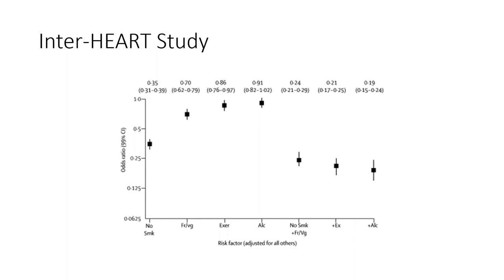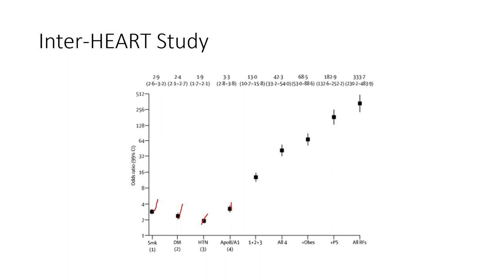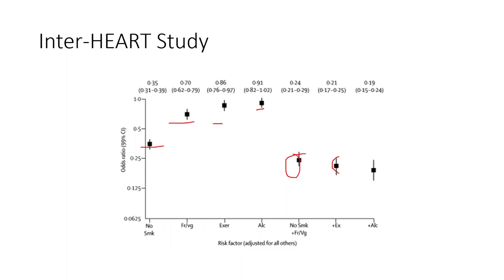Then we looked at things we can do to reduce the risk. Cutting out smoking — huge by itself. Eating fruits and vegetables — huge; odds ratios drop below one, a pretty good effect. Adding in exercise and moderate alcohol intake also helps. And if you combine no smoking and fruit intake with some exercise, there's an additive effect. So we're finding that if we address risk factors — exercise, smoking cessation, diet — we can have significant inroads to improving outcomes for patients.